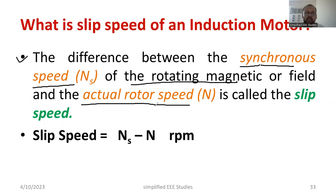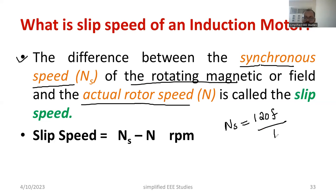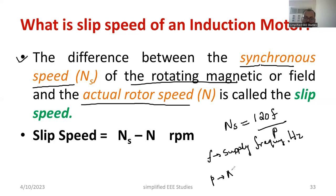Let me explain what is synchronous speed. Synchronous speed is the speed of the Rotating Magnetic Field. As soon as you apply the three-phase supply, there is a production of Rotating Magnetic Field in the stator. The speed of this Rotating Magnetic Field is NS, and you can calculate NS using the formula: NS = 120 × F / P, where F is the supply frequency in Hertz and P is the number of poles.